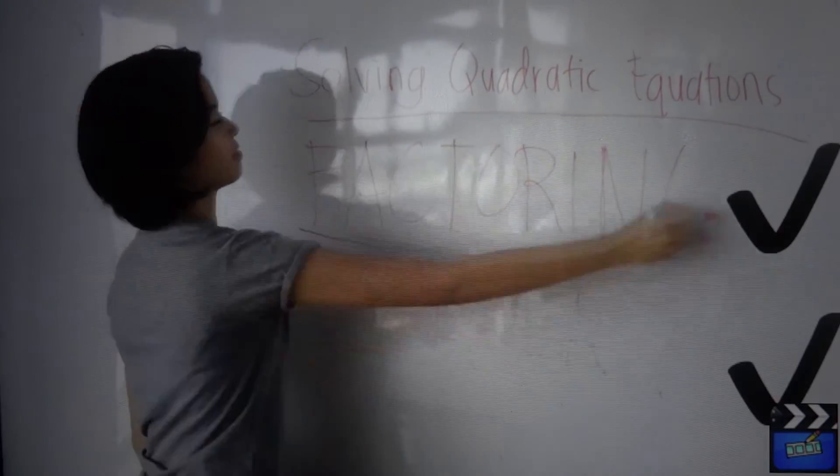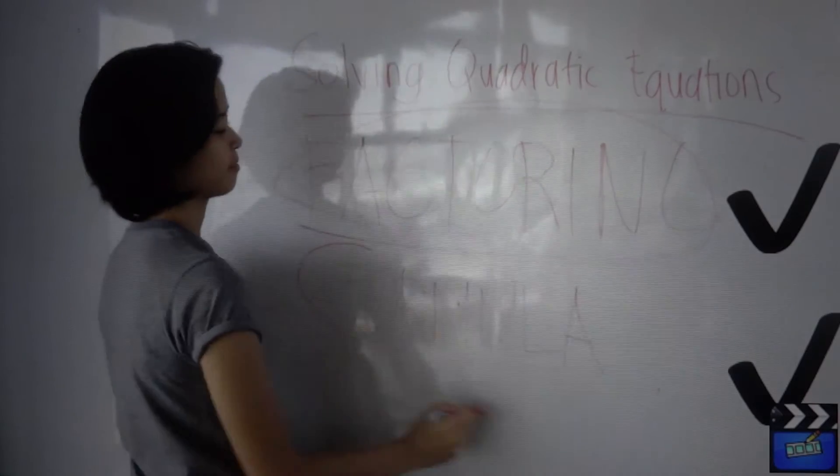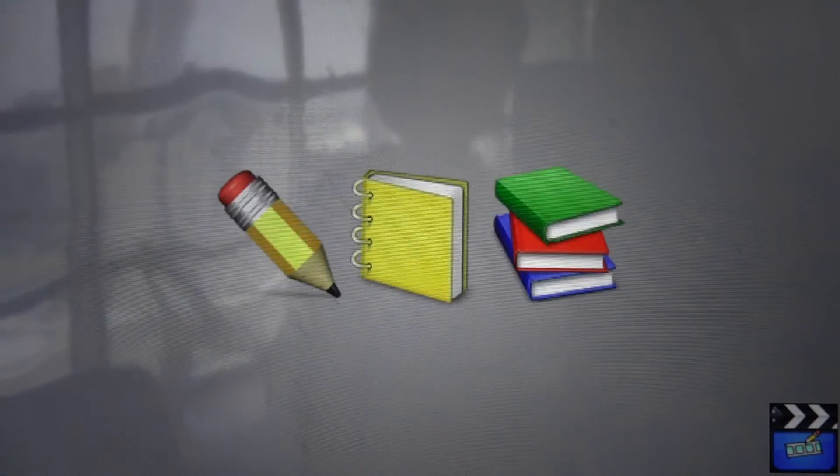There are two ways of solving quadratics: factoring and using the quadratic formula. Of these methods, the quadratic formula is the most reliable method that will give you the correct answer without guesswork.